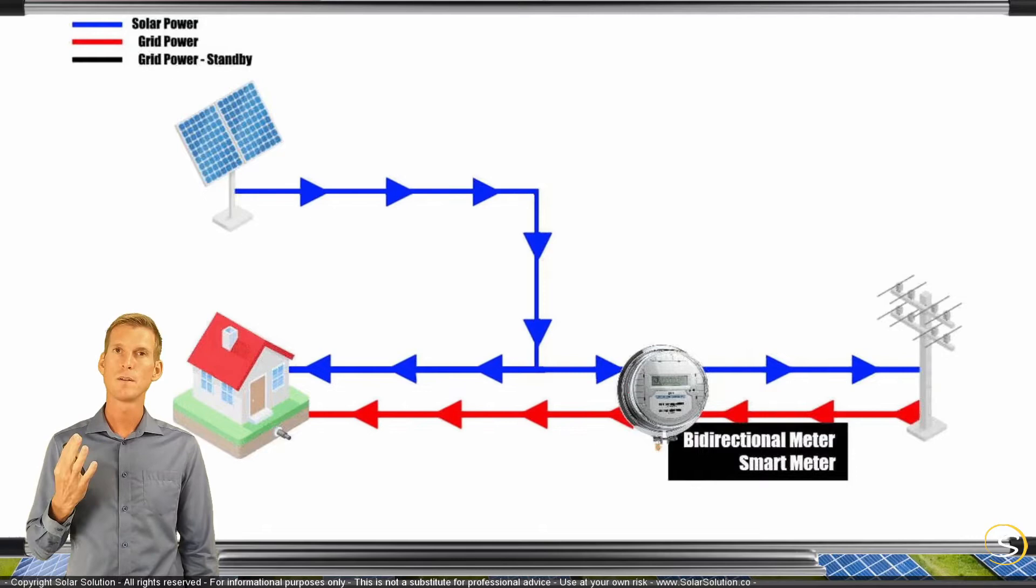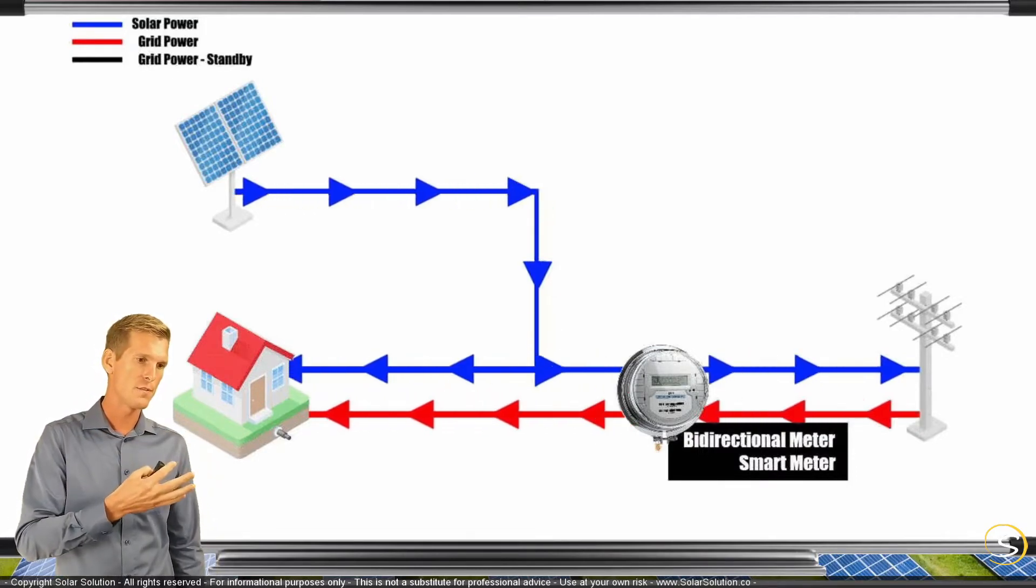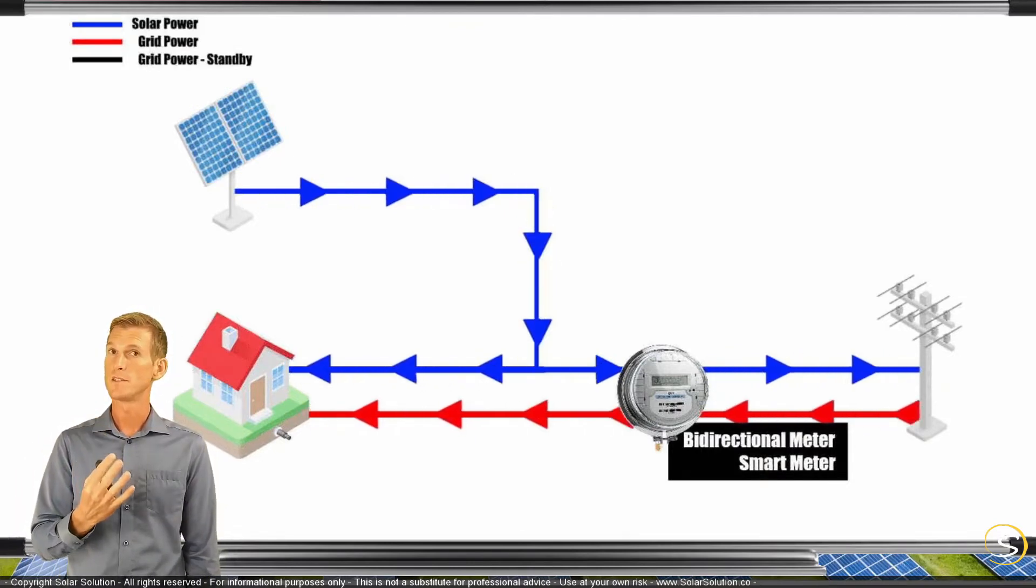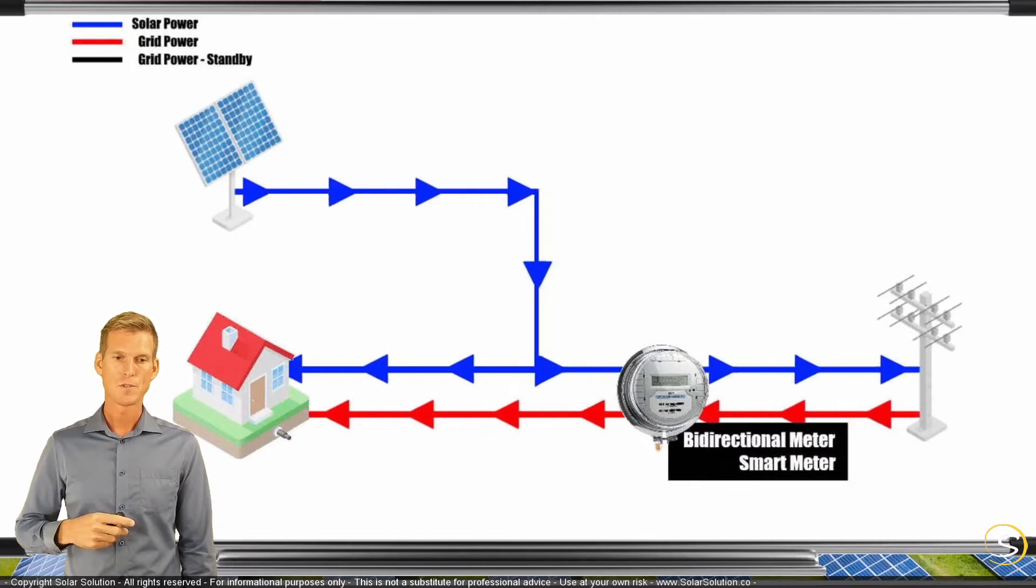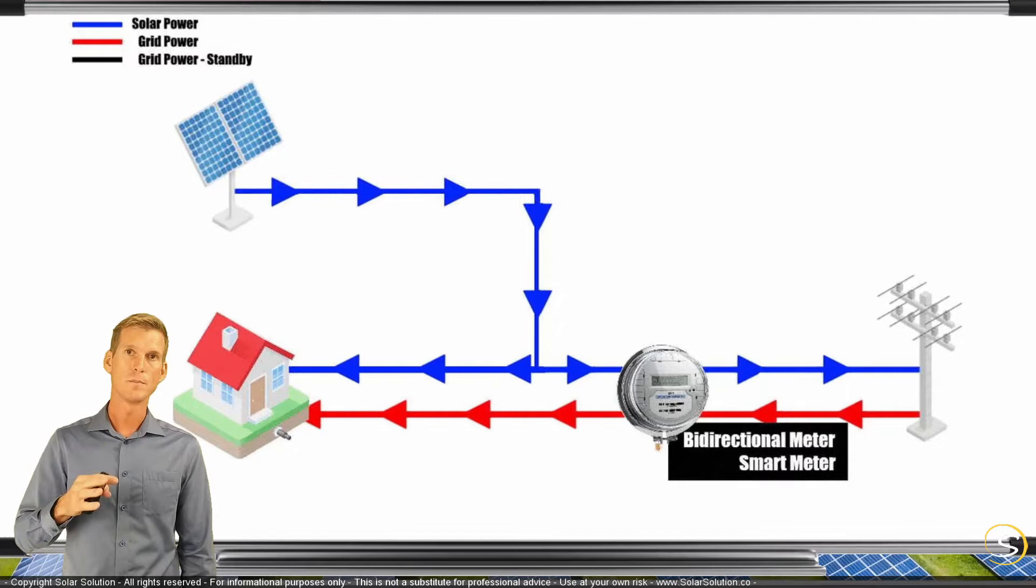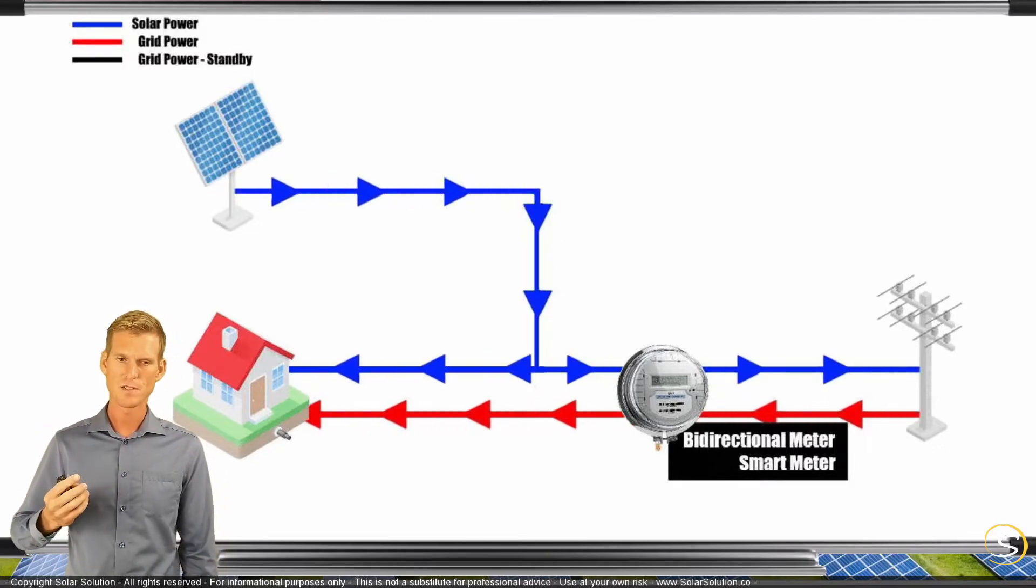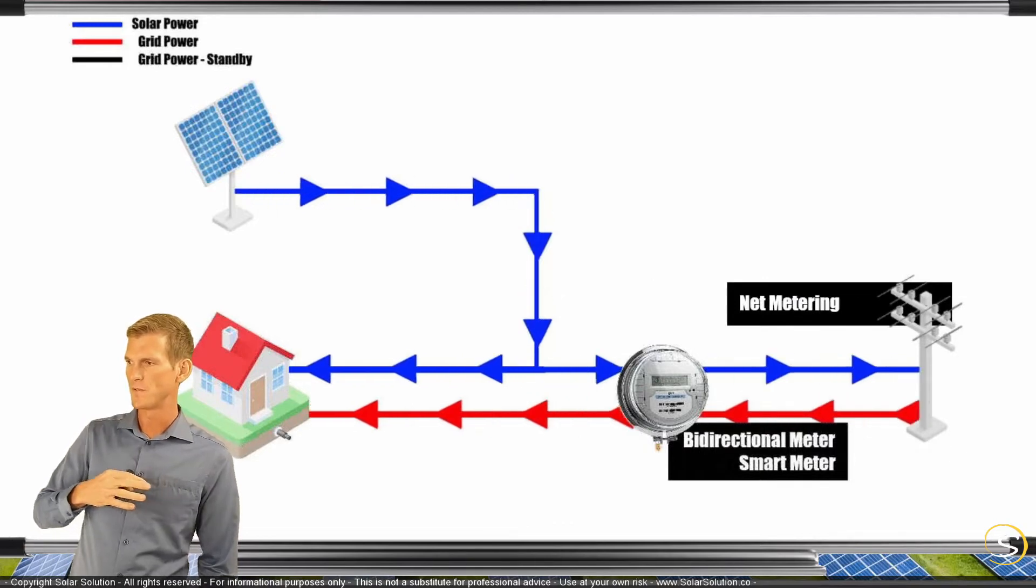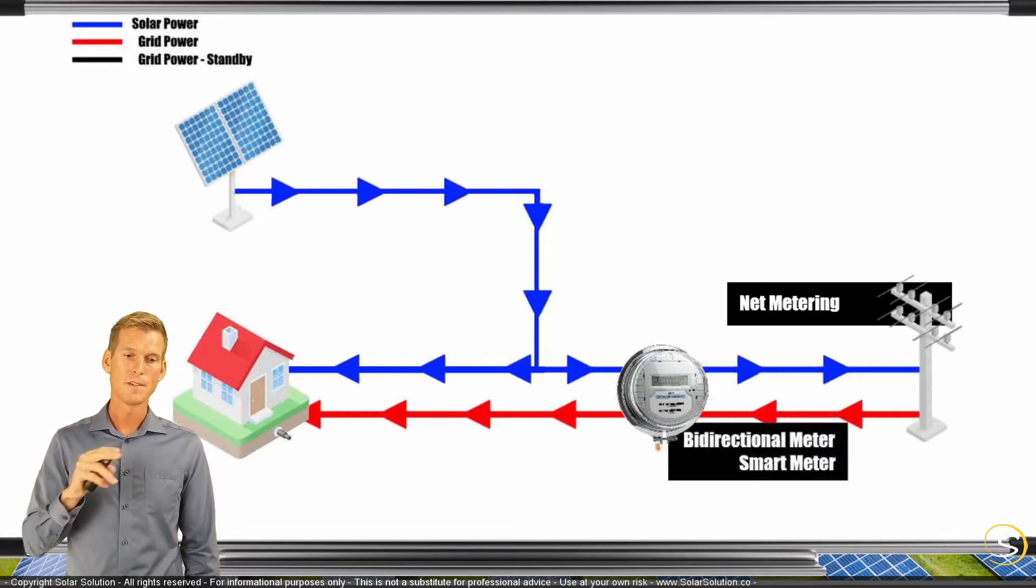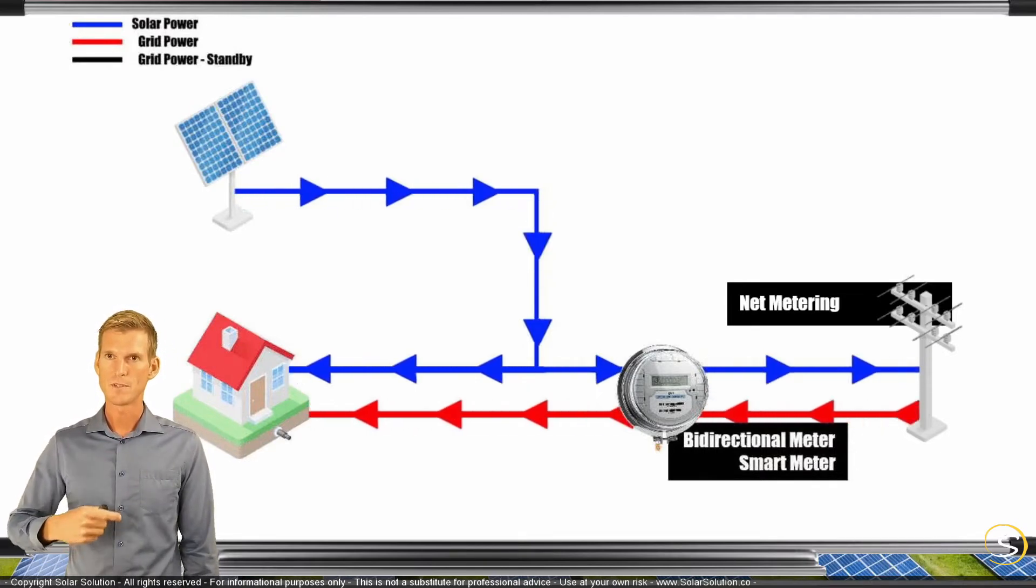From here on forward, there are many different financial models that can be used in such a situation, but it changes little to nothing to the physical way in which your grid-tied solar energy system is set up. Let's discuss a few different compensation models. The first model is net metering. They measure how much you're feeding into the grid and how much you're taking out, deduct it, and the balance is what you pay.